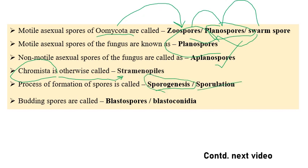Non-motile asexual spores of Oomycota fungi are called aplanospores. Planospores means motile spores; aplanospores means non-motile spores. The process of formation of spores is called sporogenesis or sporulation. Budding spores are called blastospores, otherwise called blastoconidia. These kinds of questions may be expected in exams — these videos are helpful not only for semesters but also for competitive exams like NET and ASRB related to plant pathology.